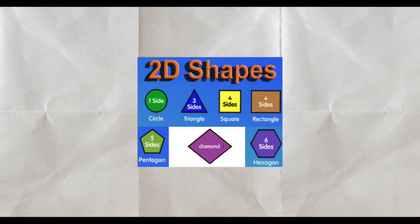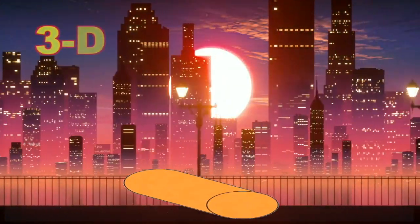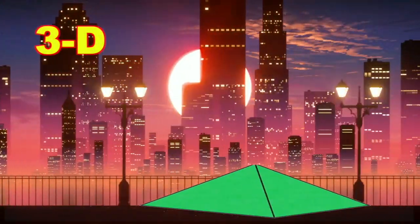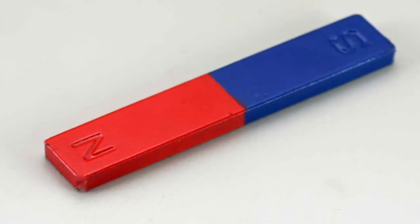Flat shapes like those on this paper have two dimensions of length and width. Our world has one more dimension. Shapes in the real world have three dimensions. They have height, too. Like this bar magnet.